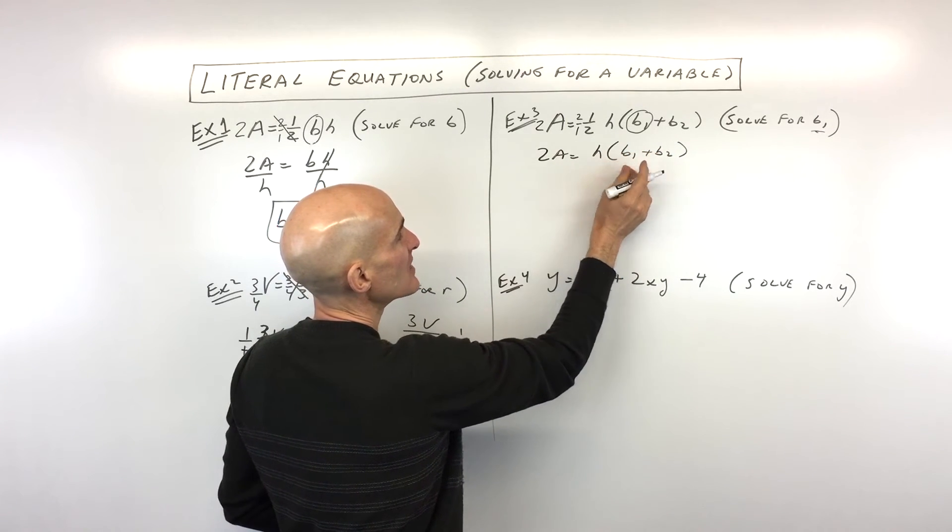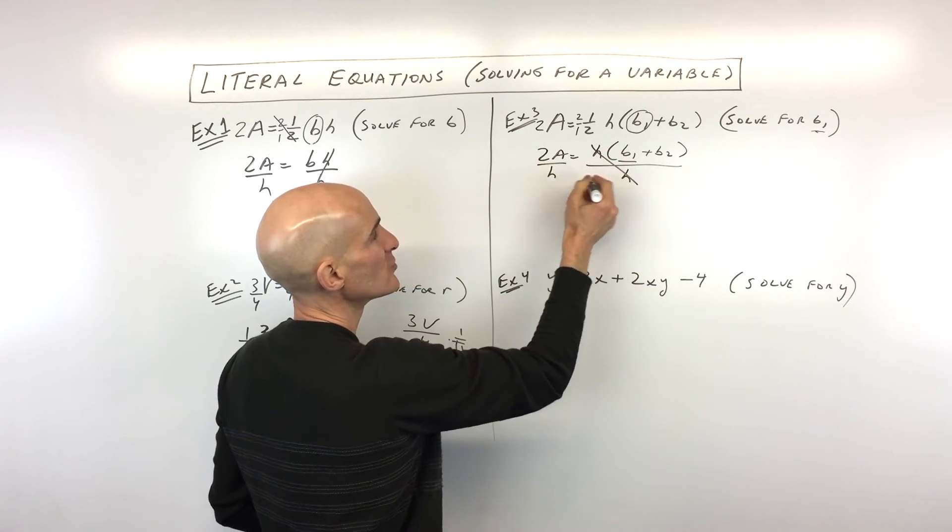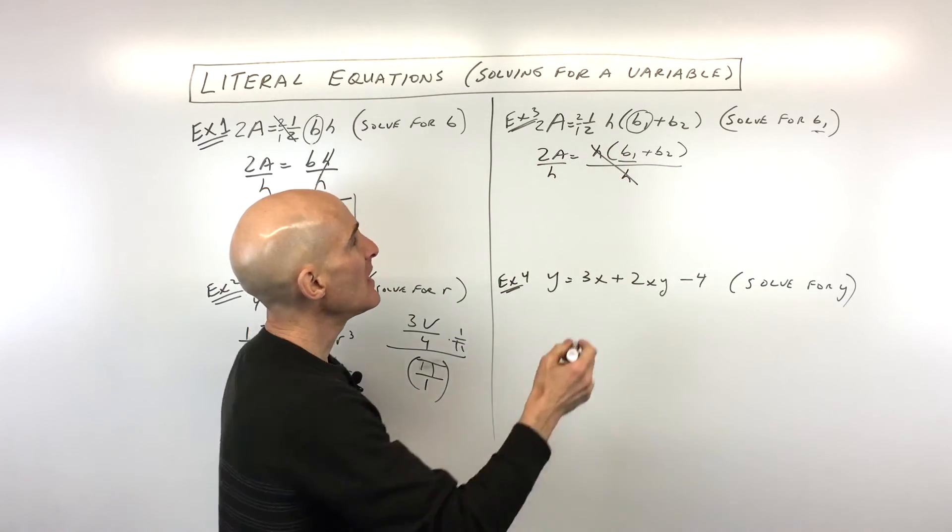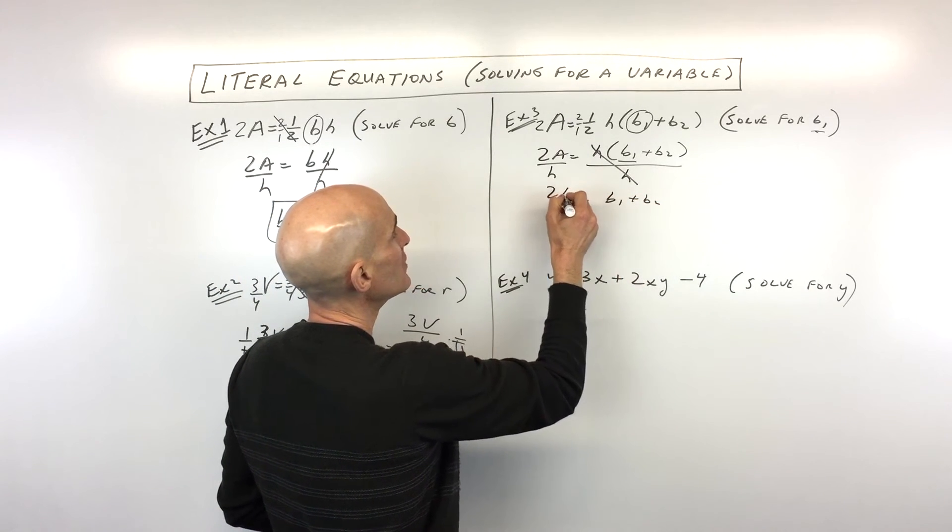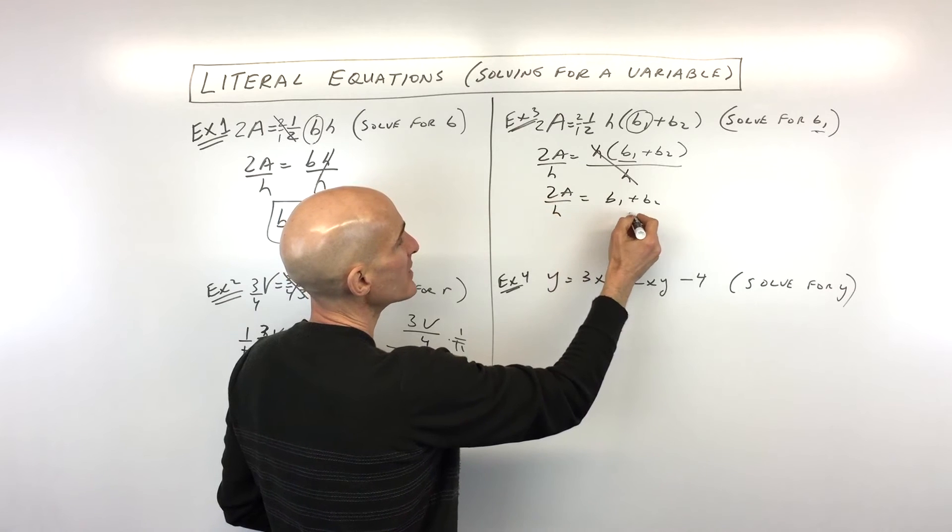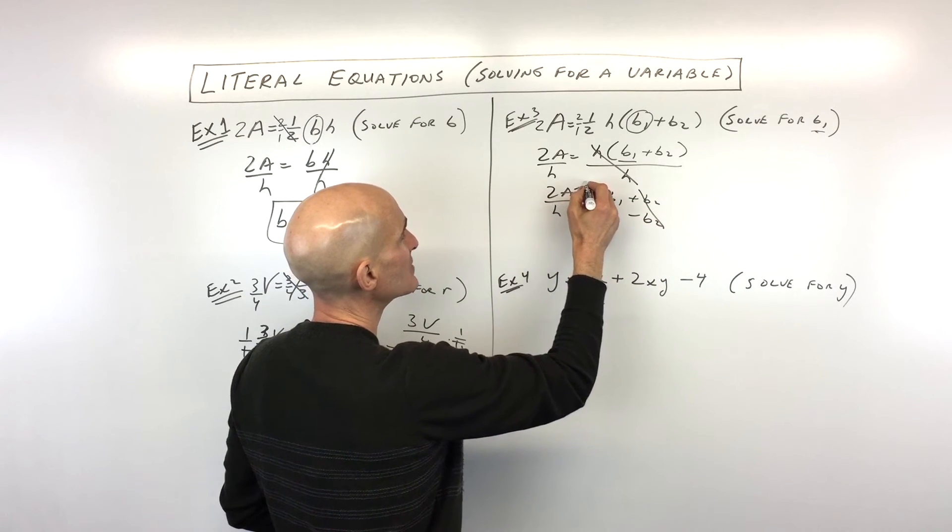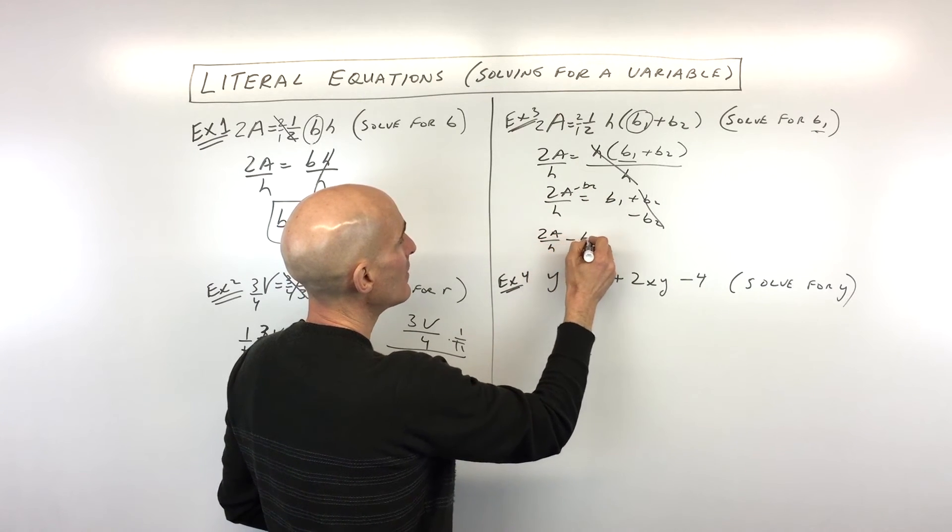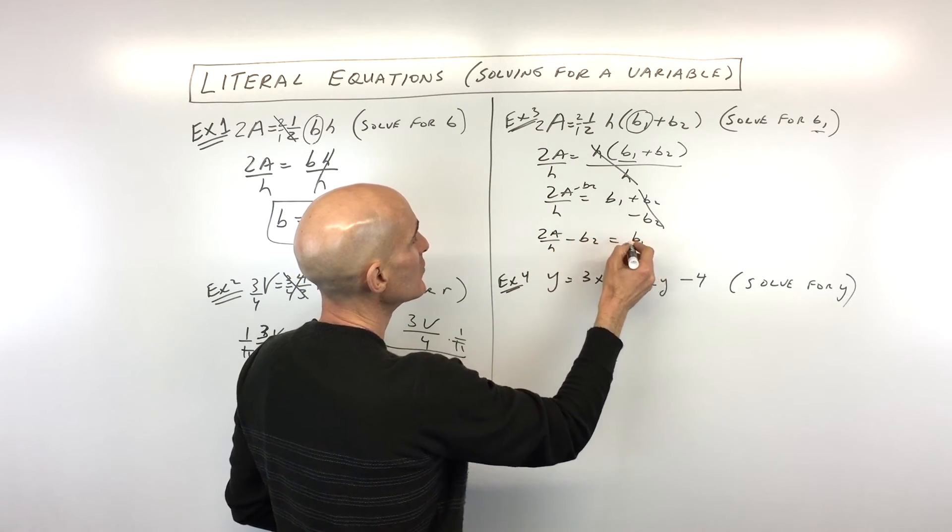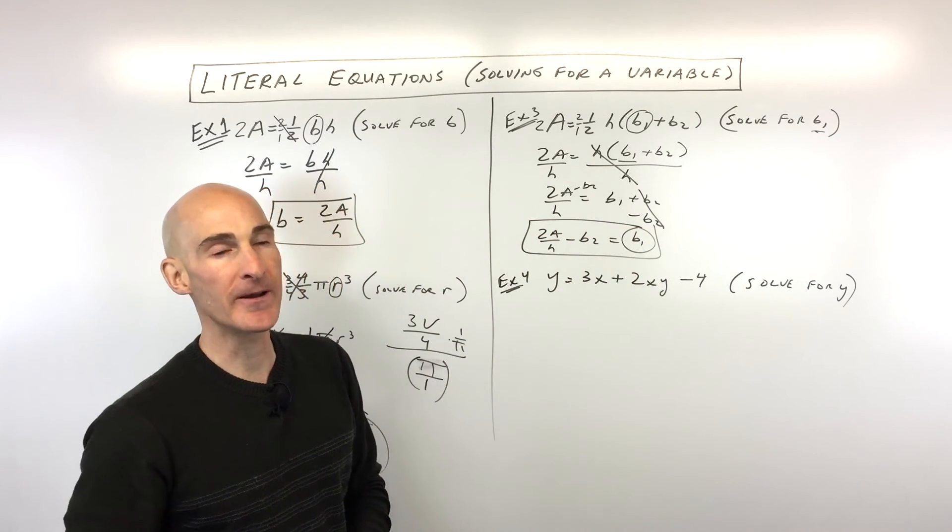Again, working from the outside in towards B1. We're going to divide by H, so that those cancel. Do it to both sides to keep it balanced. And then now you can see we're at B1 plus B2 equals 2A over H. We want to subtract B2, so that those cancel. And if we do that to the right side, we want to do it to the left side. So we have 2A over H minus B2 equals B1. And that was our goal was to get B1 by itself, solve for B1.